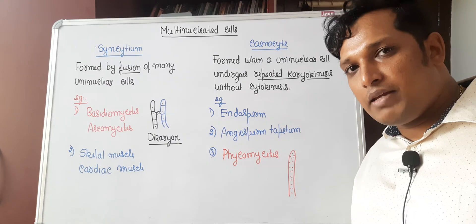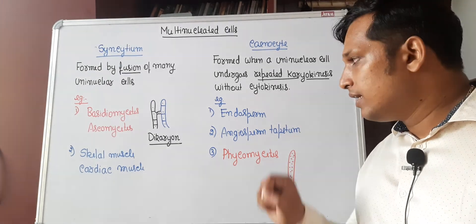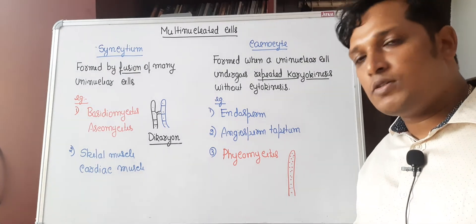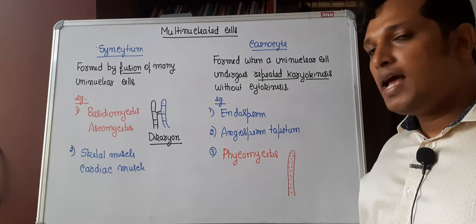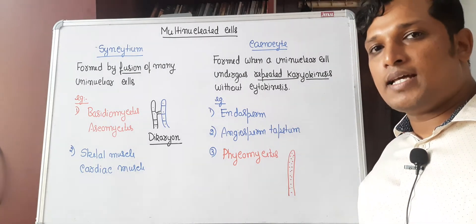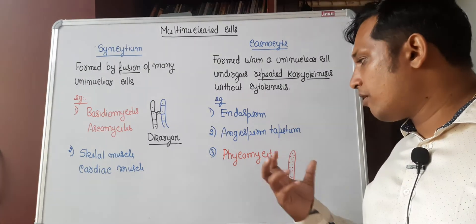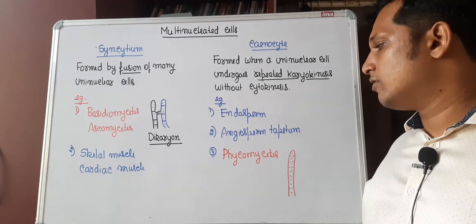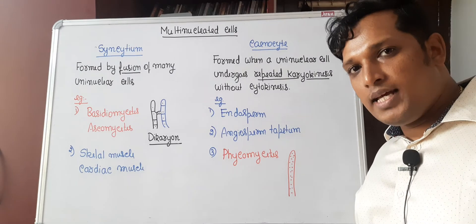An example is endosperm formation: the primary endosperm nucleus, which is triploid, undergoes repeated karyokinesis without cytokinesis — that is how endosperm is formed. In angiosperms, the tapetum found in their anther is also an example of a multi-nucleated cell in a synocytic condition.